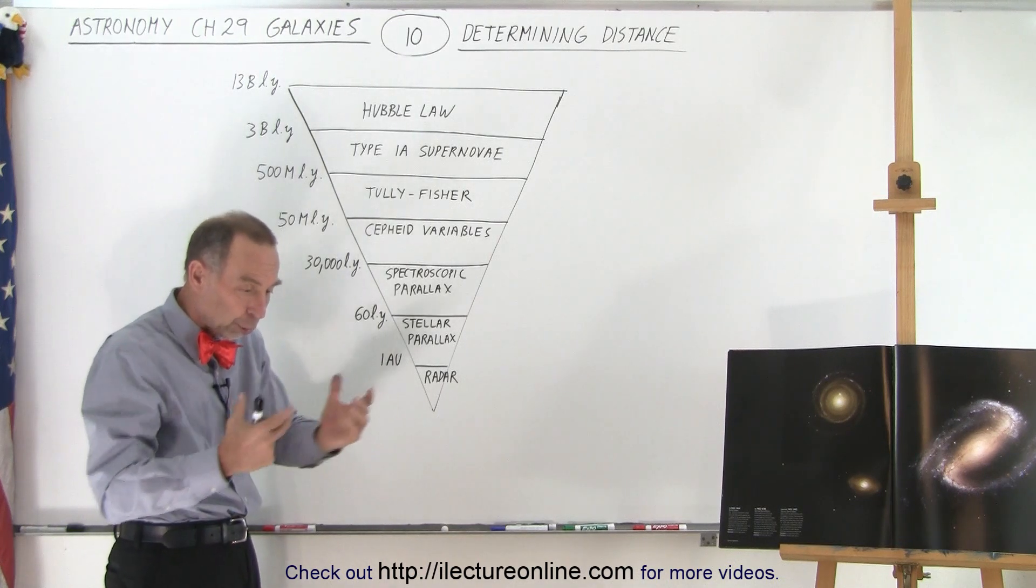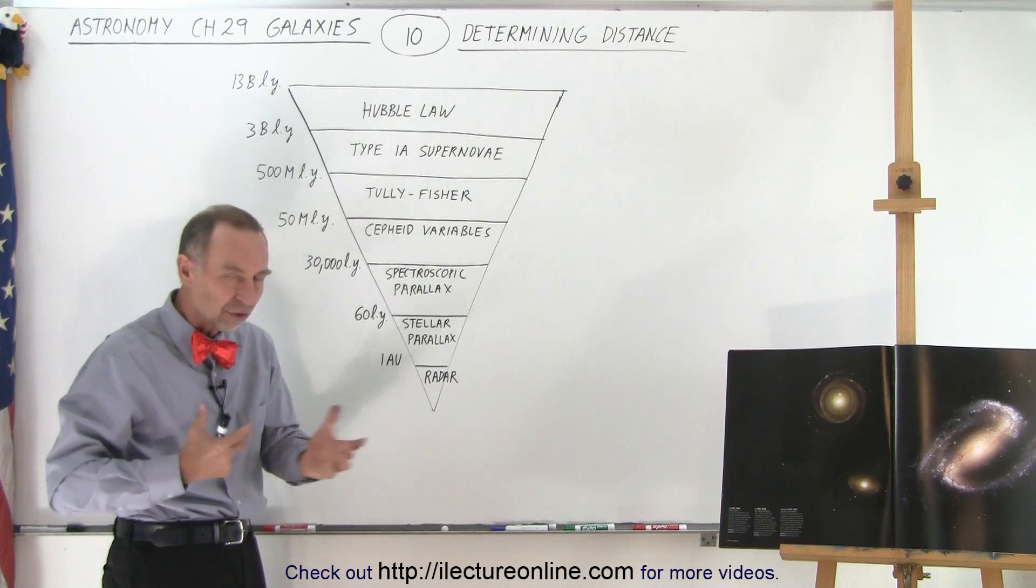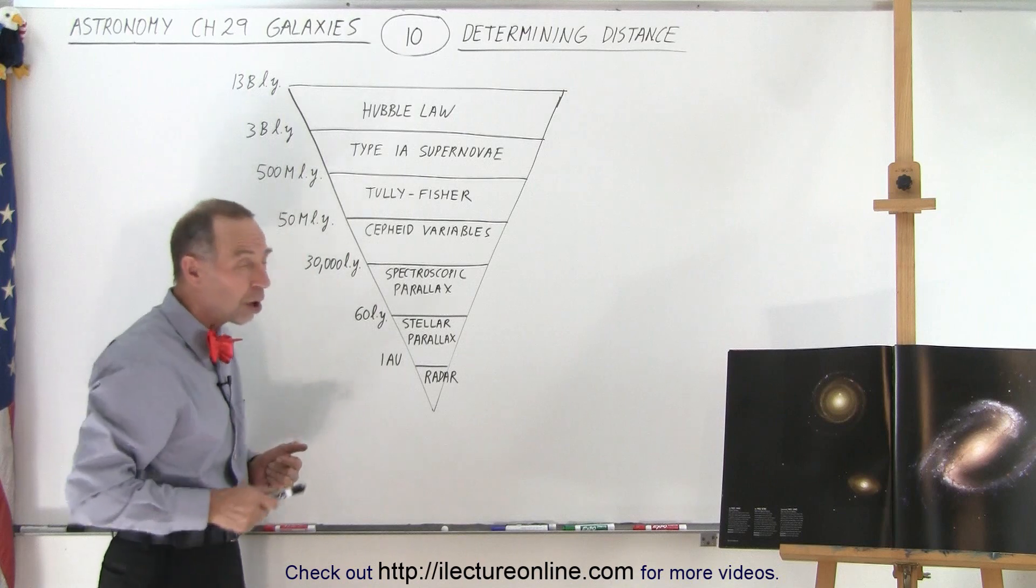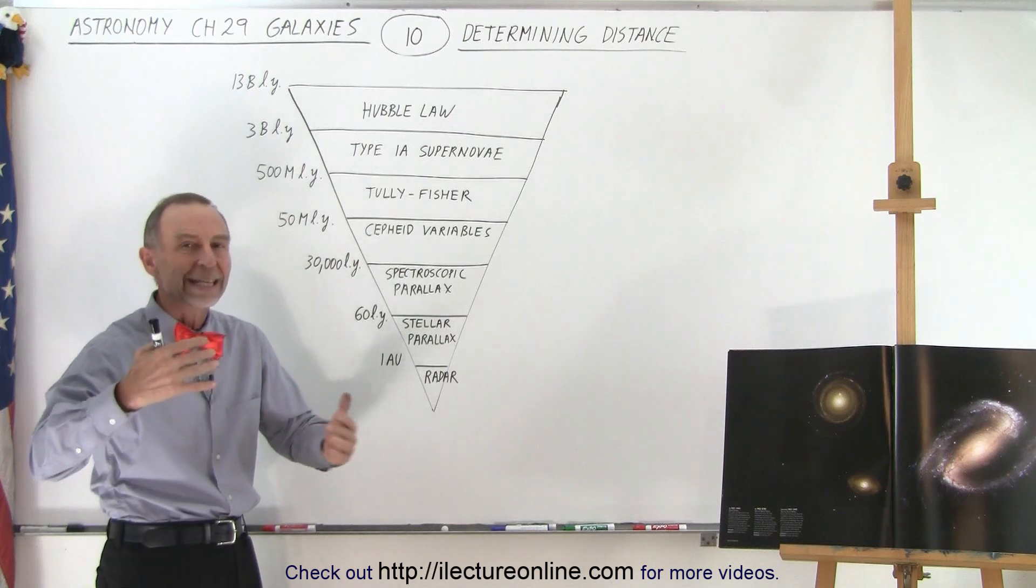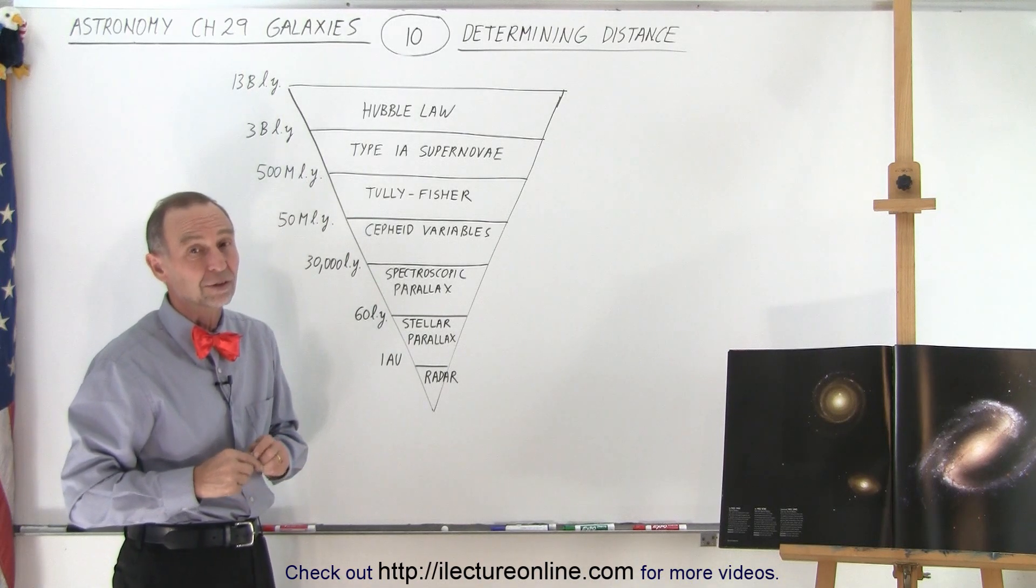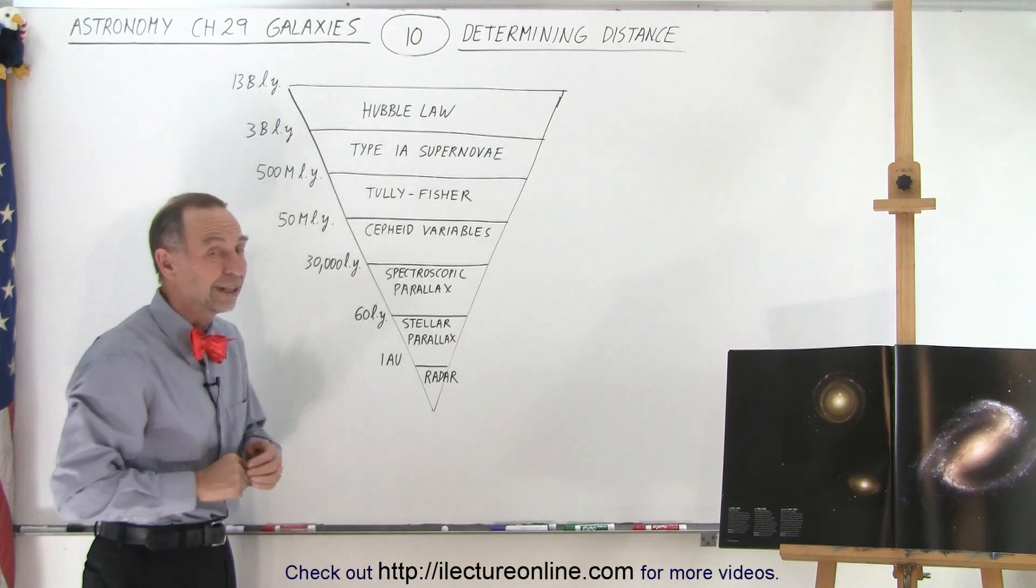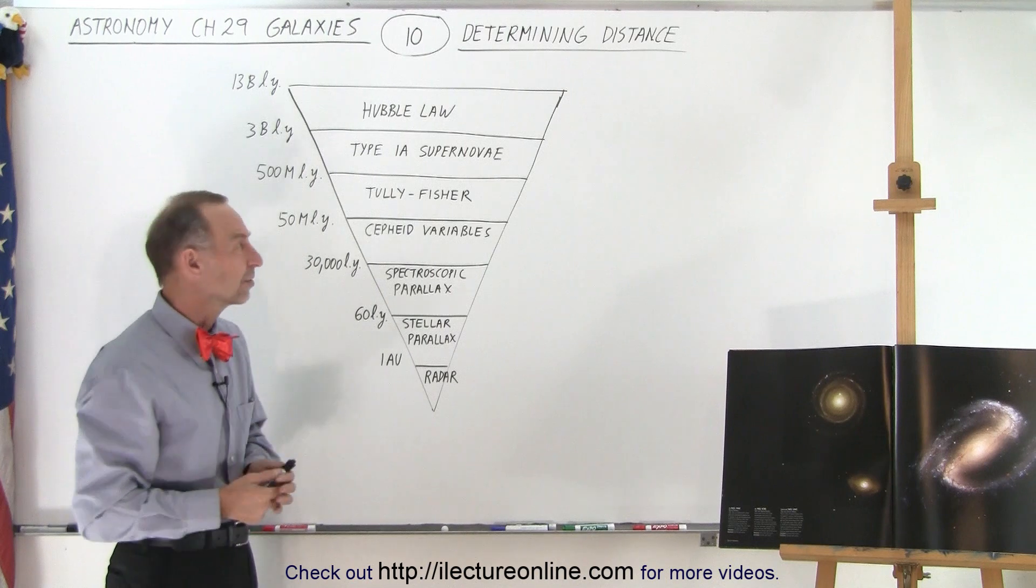Of course, because of local gravitational interaction between galaxies, like near the Virgo cluster, the Hubble law is not a good method due to other motion caused by gravity. But in general throughout most of the universe, using the Hubble constant is a pretty good method for large distances to galaxies.